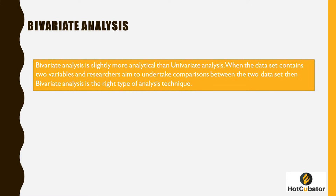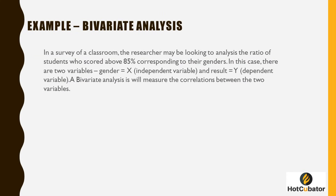Bivariate analysis is slightly more analytic than univariate analysis. When the data set contains two variables and the researcher aims to undertake a comparison between the two, bivariate analysis is the right approach. For example, a researcher may analyze the ratio of students who scored above 85% corresponding to their gender — with gender as the independent variable and result as the dependent variable.